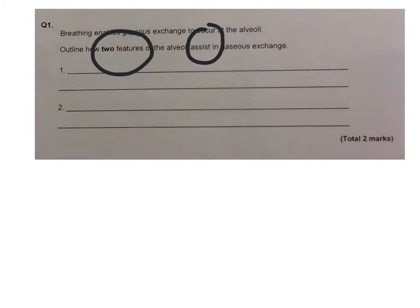As you know, gaseous exchange is where oxygen comes into the body and gets diffused from the alveoli into the bloodstream and to wherever is needed within the body. And then the second part of that process is where carbon dioxide comes from the bloodstream, diffuses into the alveoli and then out of the body.